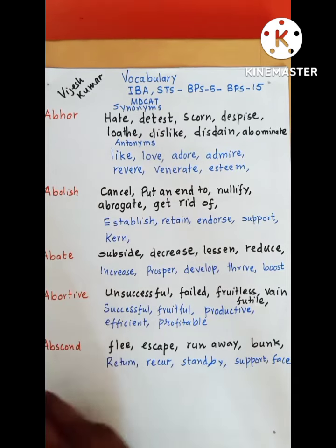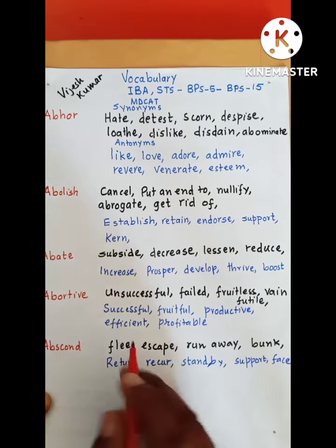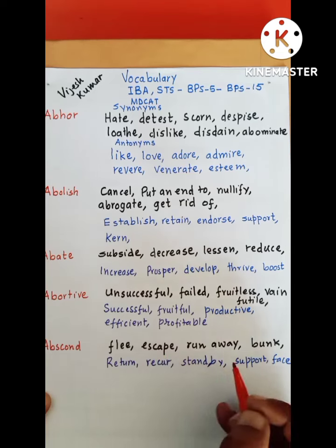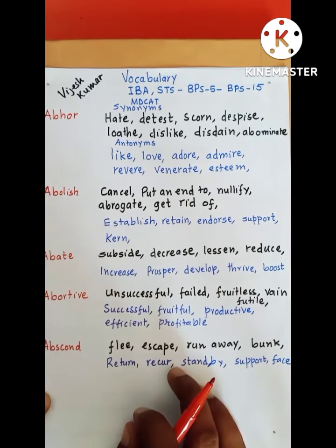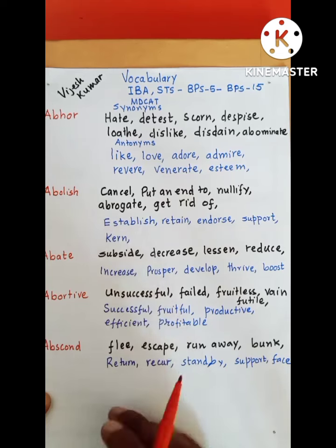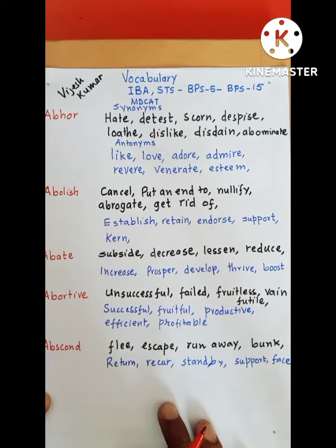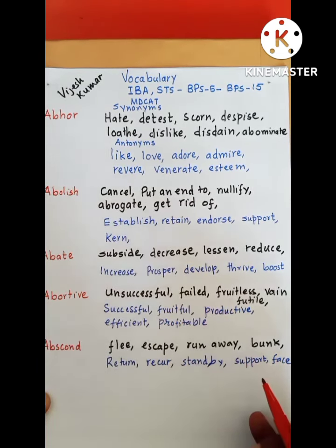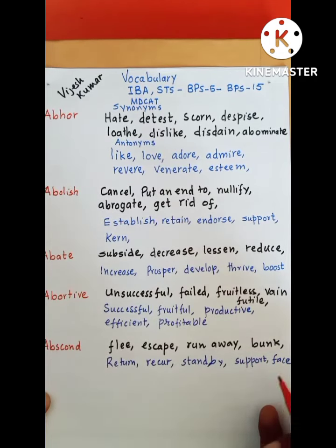And the last word is abscond. Abscond means philly, a runaway, escape, bunk, bhajiwane. And its antonyms are return, recur, stand by, sustain, support, and face.